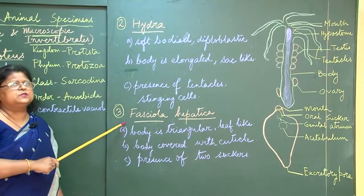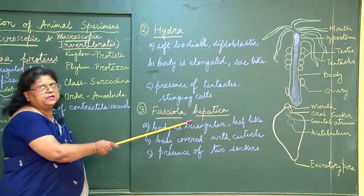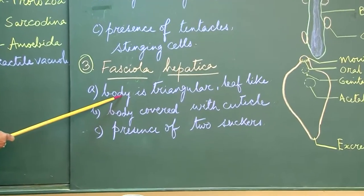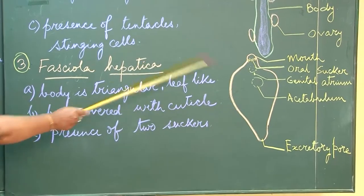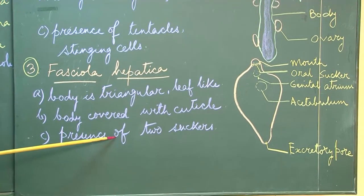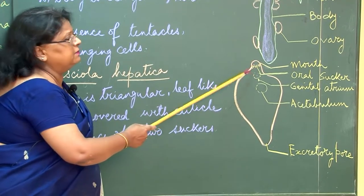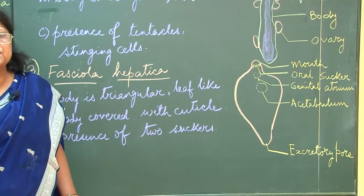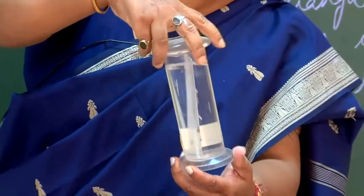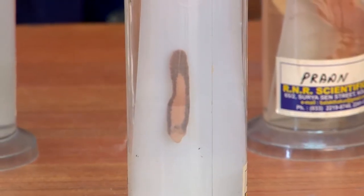The third one is not microscopic — I will show it to you. Its name is Fasciola hepatica. This body is triangular in shape and resembles a leaf-like structure. The body is covered with cuticle and there are two suckers because they are parasites, which help them to suck the nutrients required for their growth. This is the liver fluke — it is a parasite.